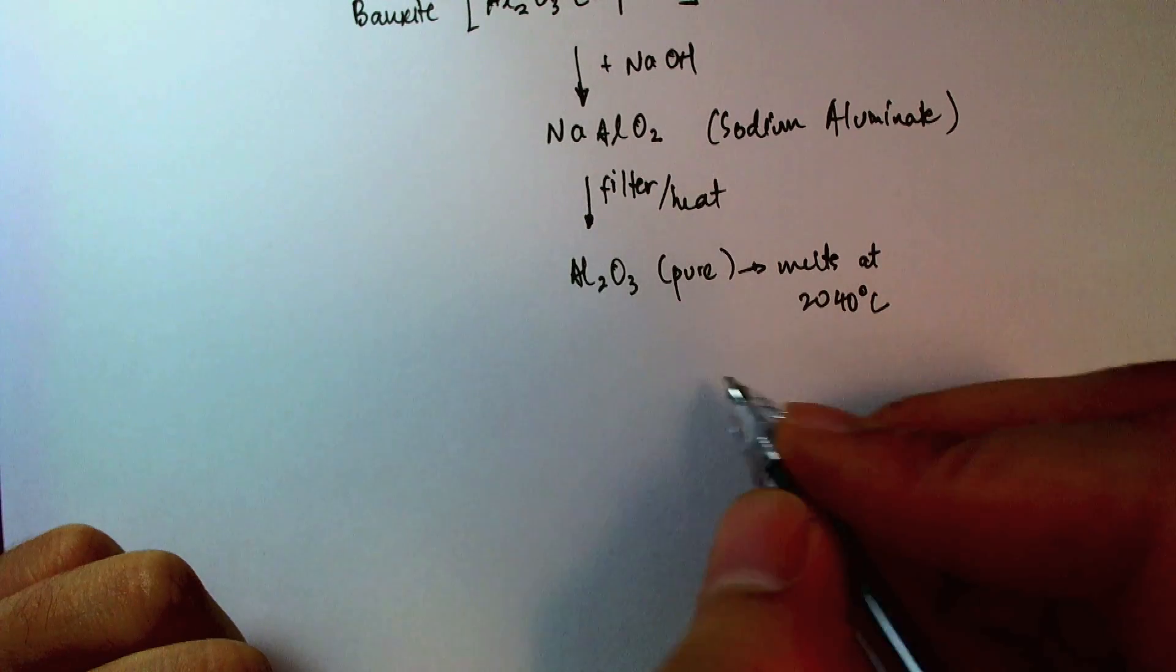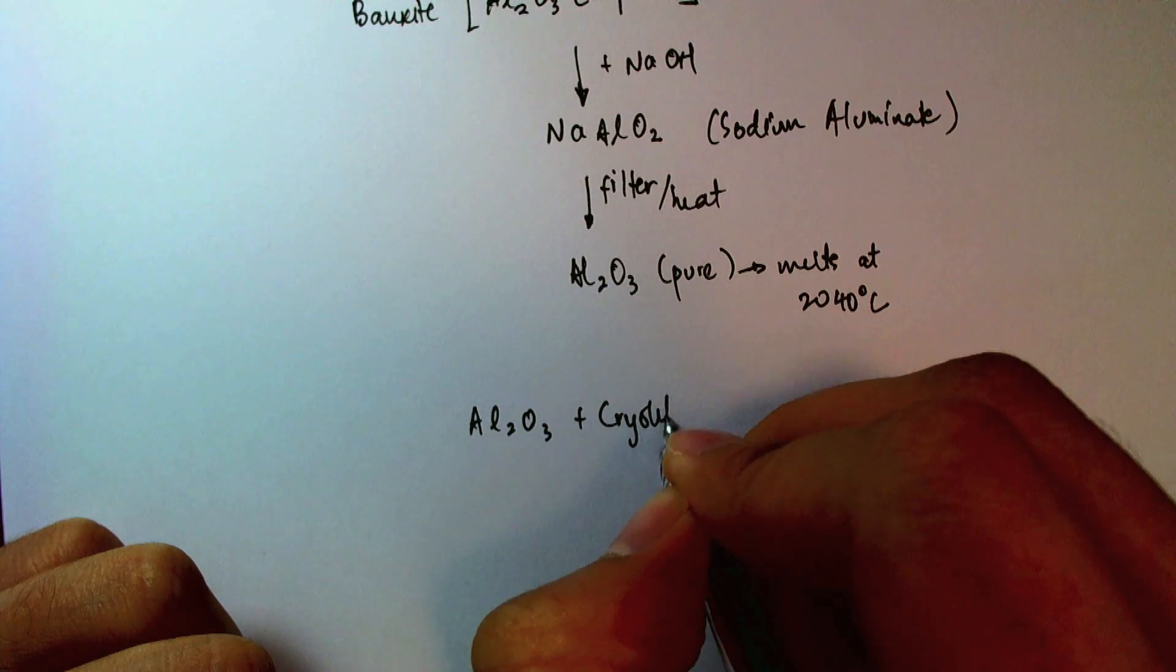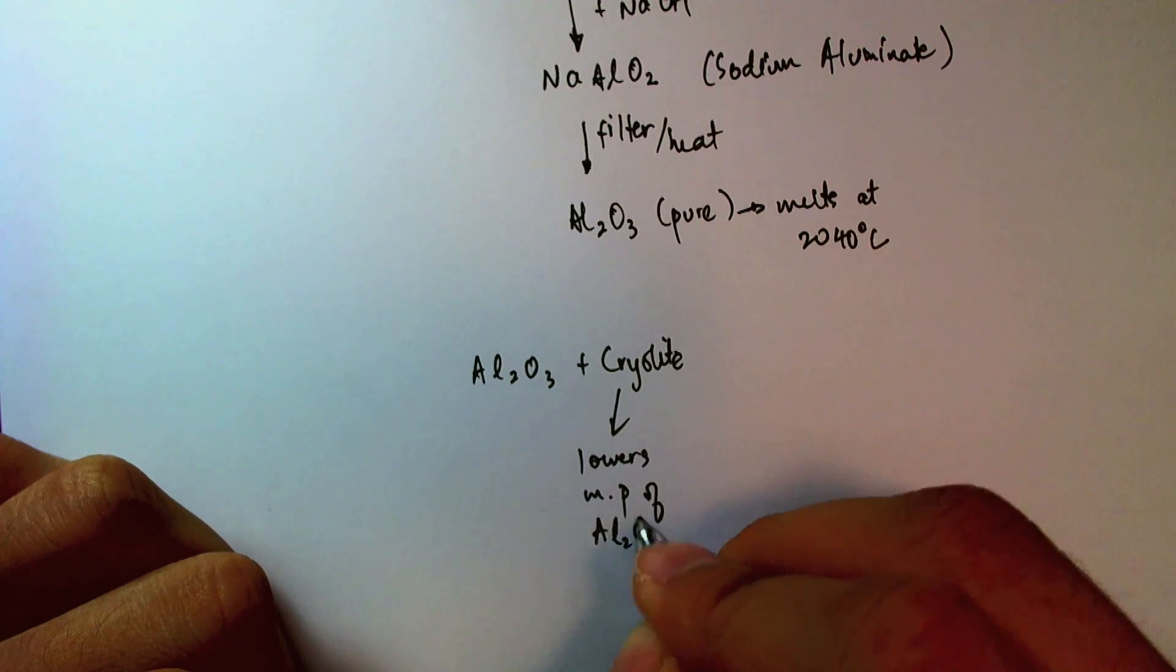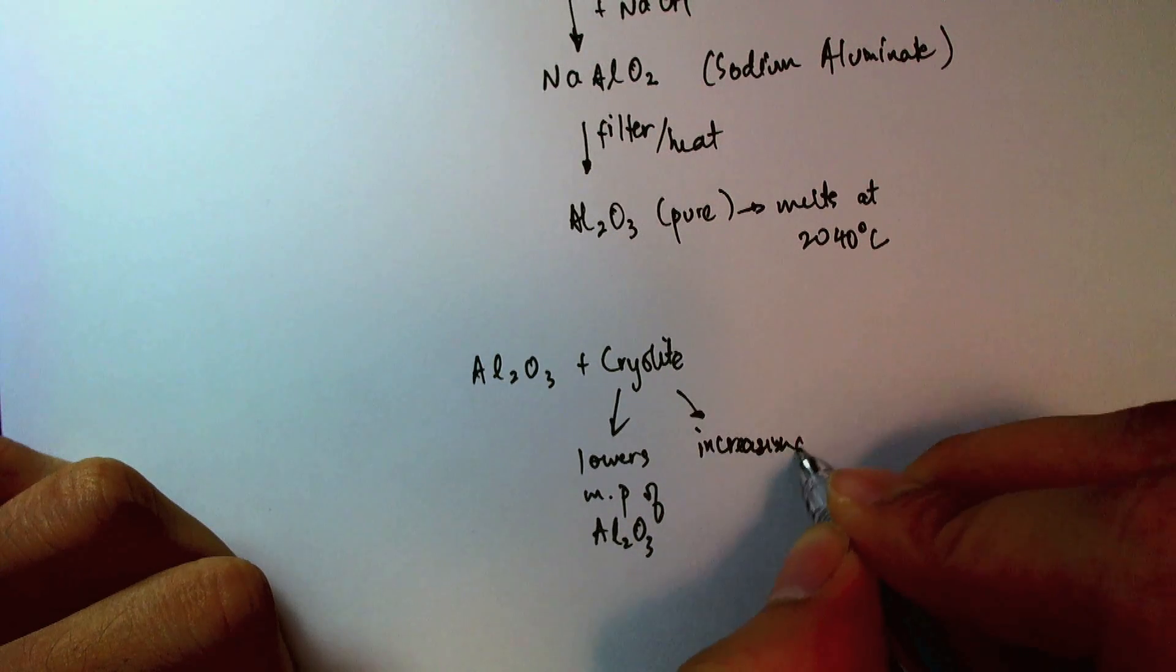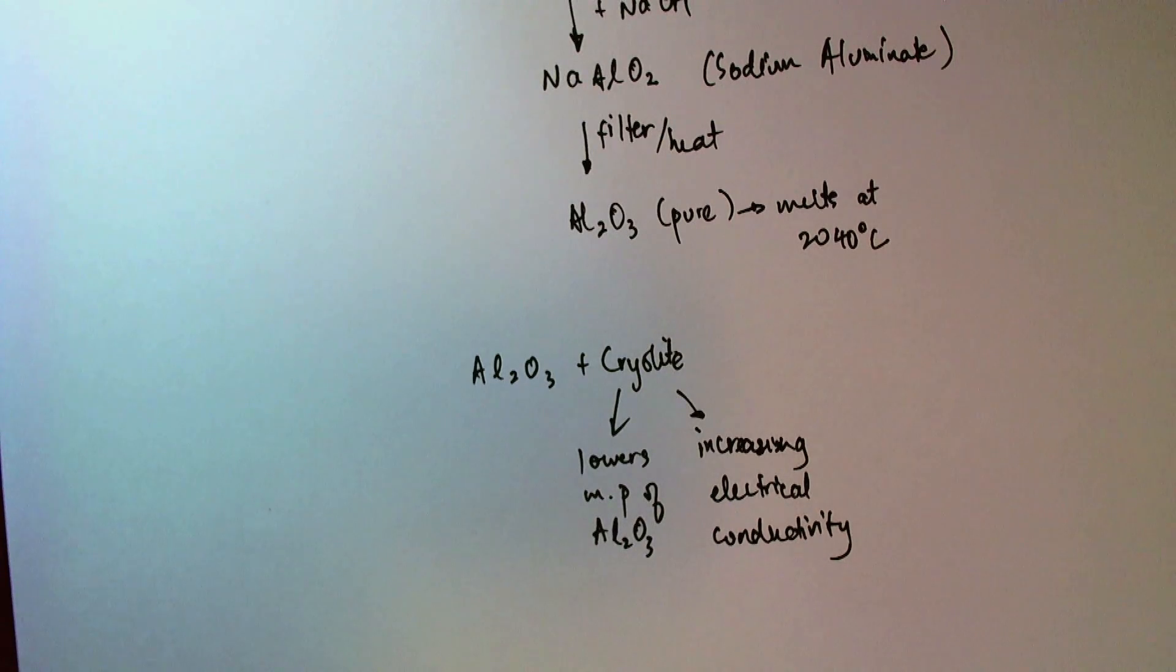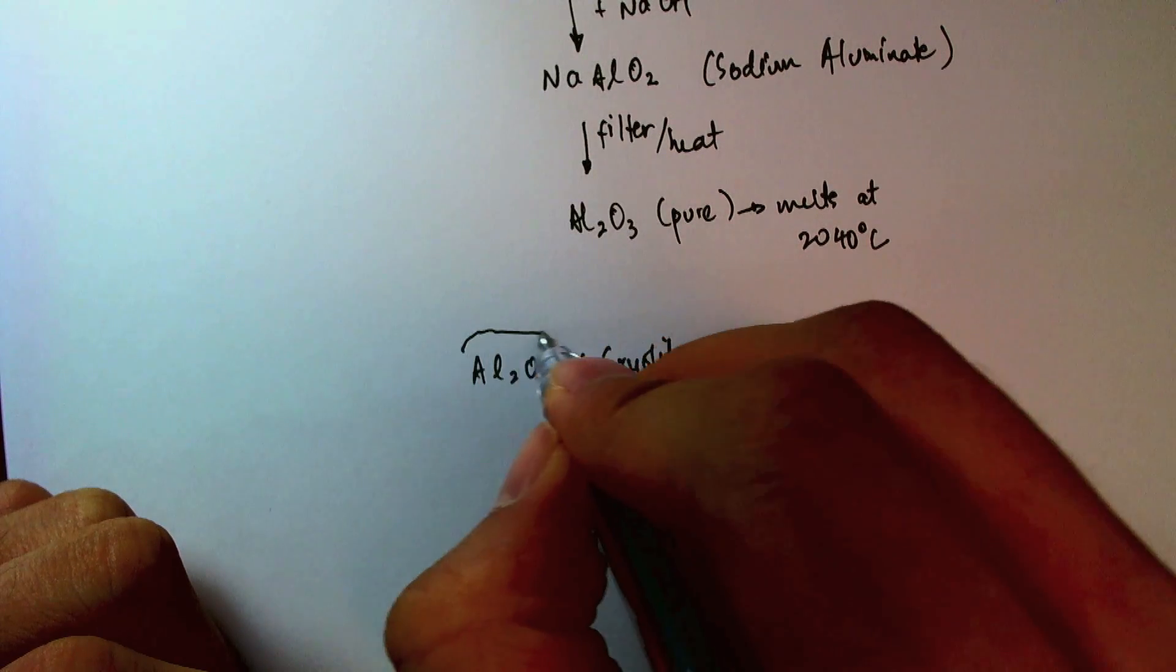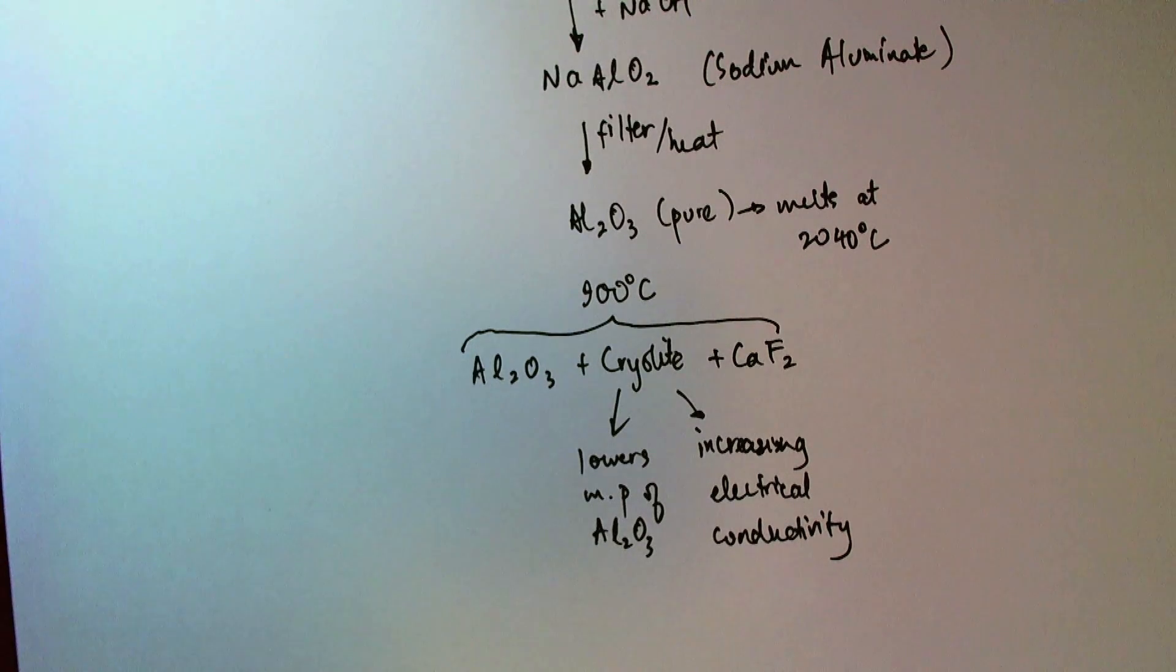So what we do is we mix the aluminum oxide with something called cryolite. Cryolite lowers the melting point of aluminum oxide while increasing its electrical conductivity. We usually add one more thing, calcium fluoride, and altogether this mixture has a melting point about 900 degrees Celsius. So we've lowered the melting point considerably, and now we can start our electrolysis process.